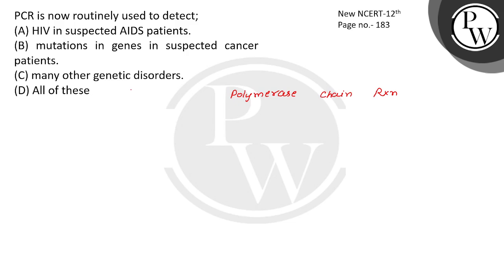PCR works like a photocopy machine — you have multiple copies of a paper. If you have a bacteria infection at a very low concentration of bacteria or virus, you can detect it by amplifying the nucleic acid by PCR.